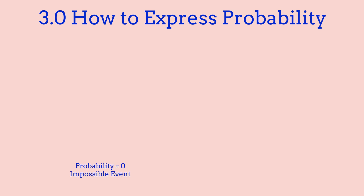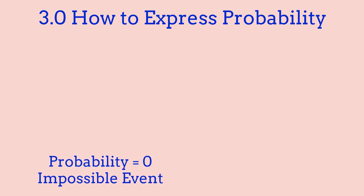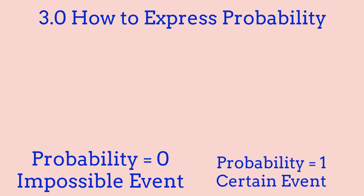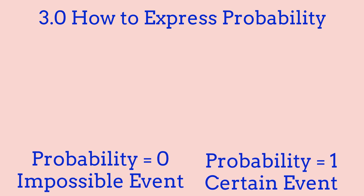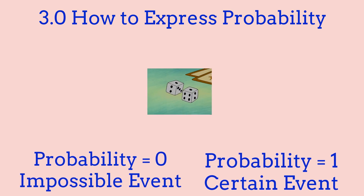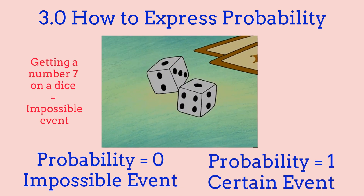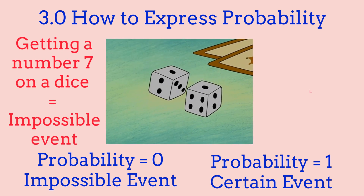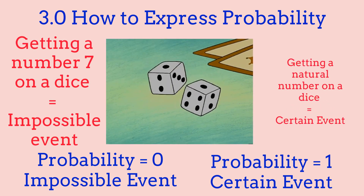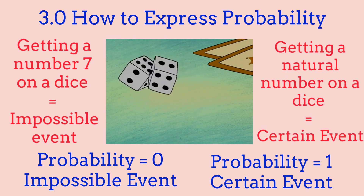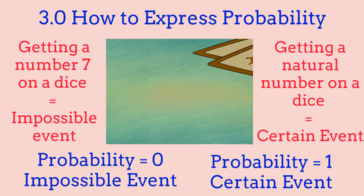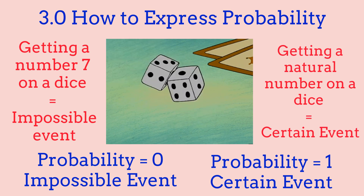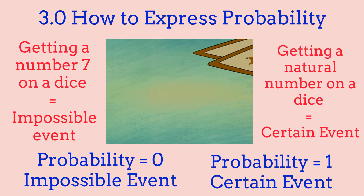Before we get into independent events, we're first going to look at probability values of 0 and 1. A probability of 0 basically means that it's impossible to get. For example, rolling a 7 on a dice — we know that's impossible because there are only numbers from 1 to 6, so the probability of getting a 7 is 0. On the other side, 1 is 100% and it is certain that you're going to get it — for example, getting a number between 1 and 6 on a dice.